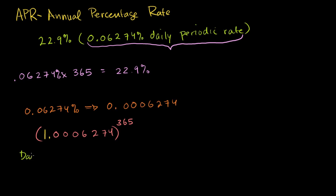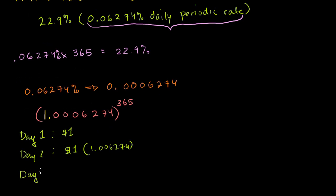Let me write this out. On day one I owe $1. On day two it's $1 times 1.0006274. On day three I pay 1.0006274 times this whole thing again. So day three is $1 times 1.0006274 times 1.0006274—I'm compounding the interest.